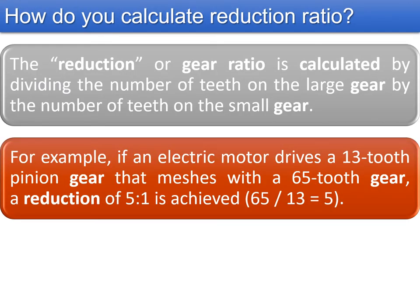The reduction ratio is calculated by dividing the number of teeth on the larger gear by the number of teeth on the smaller gear. For example, if an electric motor drives a 13-tooth pinion gear that meshes with a 65-tooth gear, a reduction of 5 to 1 is achieved — that is the ratio of 65 divided by 13, which equals 5.